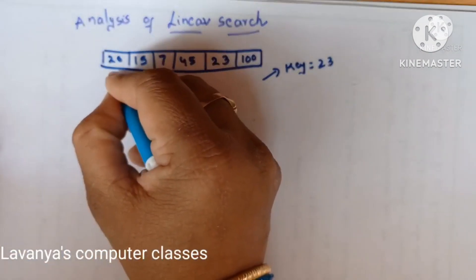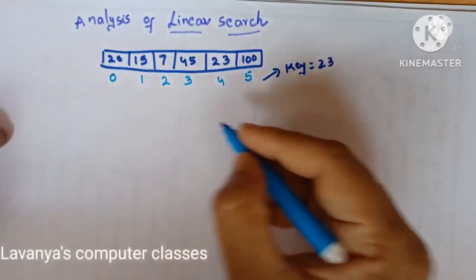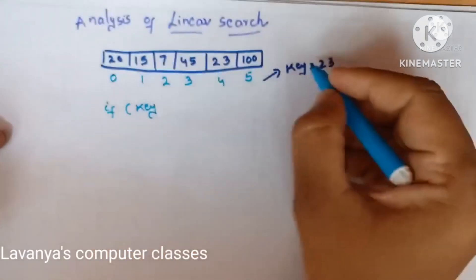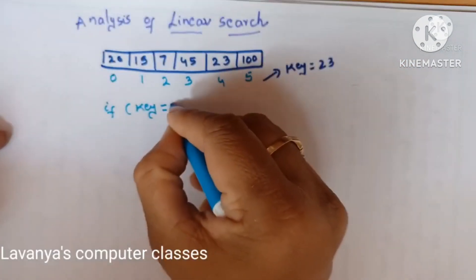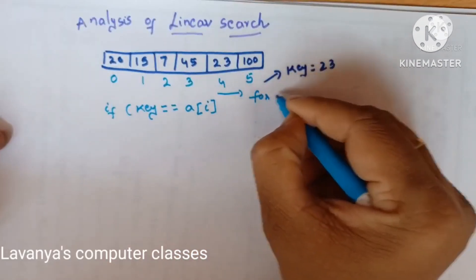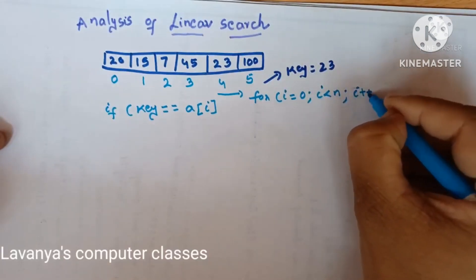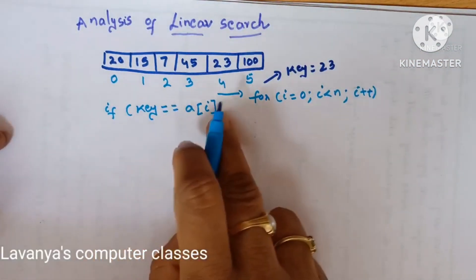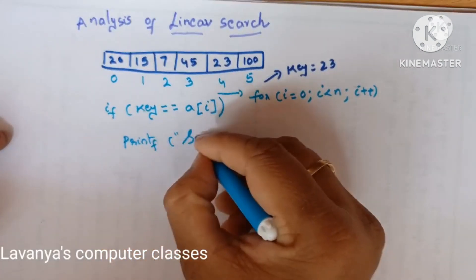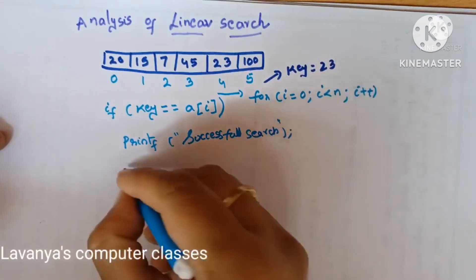So how can you search the element? This is the array — elements start from index 0, 1, 2, 3, 4, 5. Totally 6 elements are there. What is the algorithm? If key equals a[i], with i starting from 0, i less than n, i plus plus — this is the loop. If key equals a[i], print successful search; otherwise, print unsuccessful search. This is the linear search algorithm.